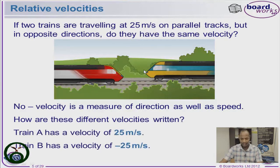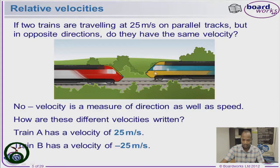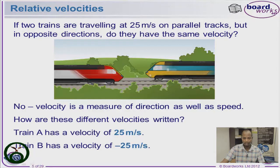Train A, shown in red, is moving towards the right — therefore it has a velocity of positive 25 meters per second. Train B, going towards the left, has a negative sign — therefore it is minus 25 meters per second. The relative velocity of both trains cancels out, because plus 25 minus 25 equals zero.